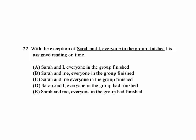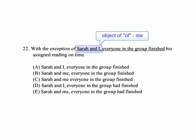Number 22. 'With the exception of Sarah and I, everyone in the group finished his assigned reading on time.' When we look at this, we have to focus on 'Sarah and I.' Sarah and I are the objects of the preposition 'of,' so you need the objective form of I, which is 'me.' One way to identify this is to let them stand alone — you'd say 'with the exception of me,' not 'with the exception of I.' It just sounds right.